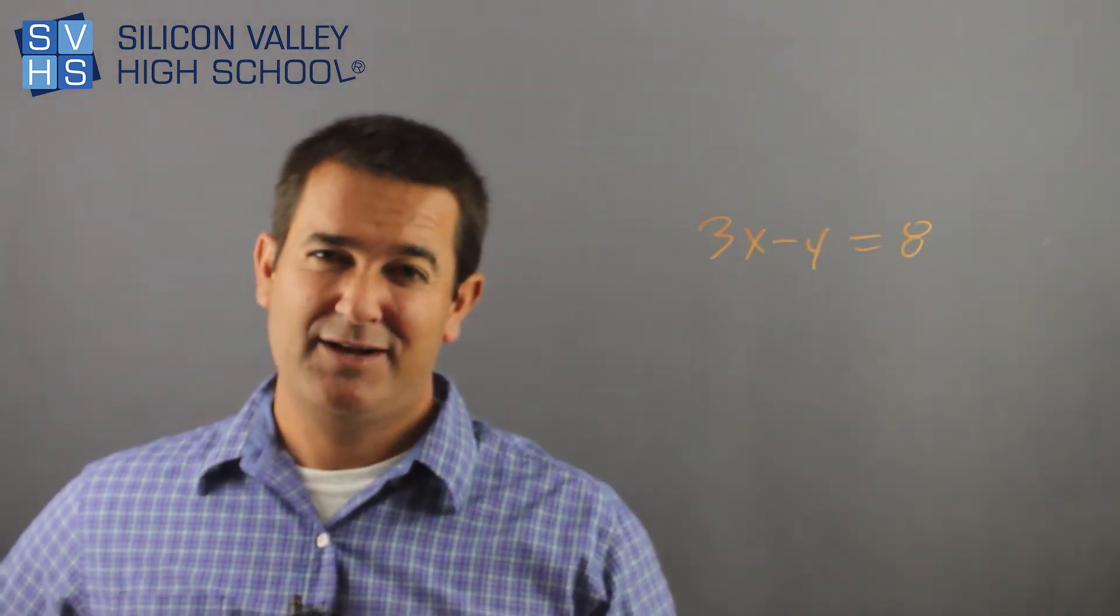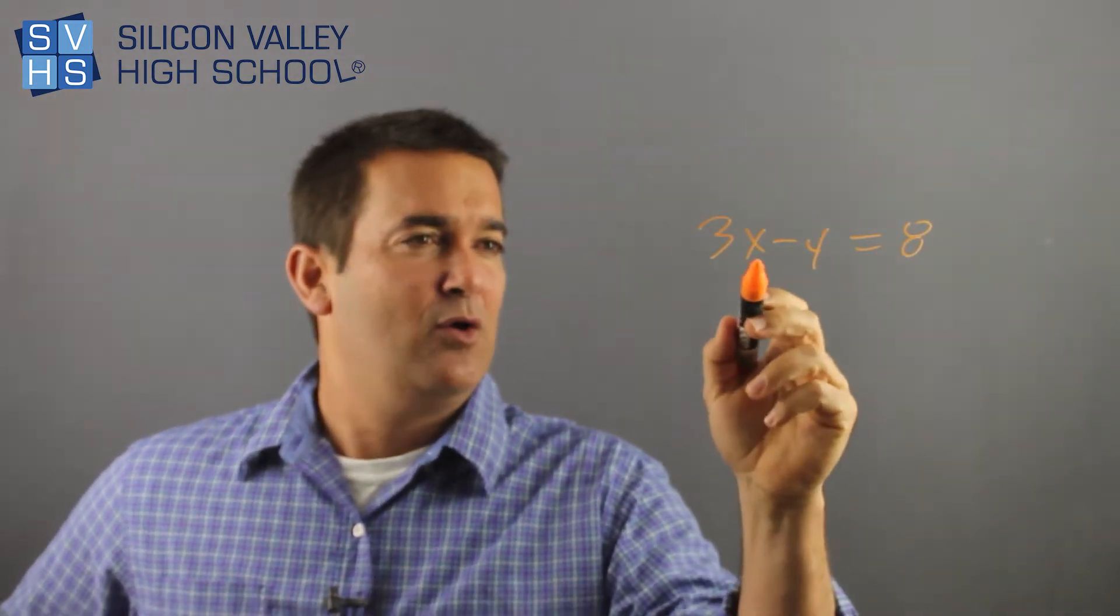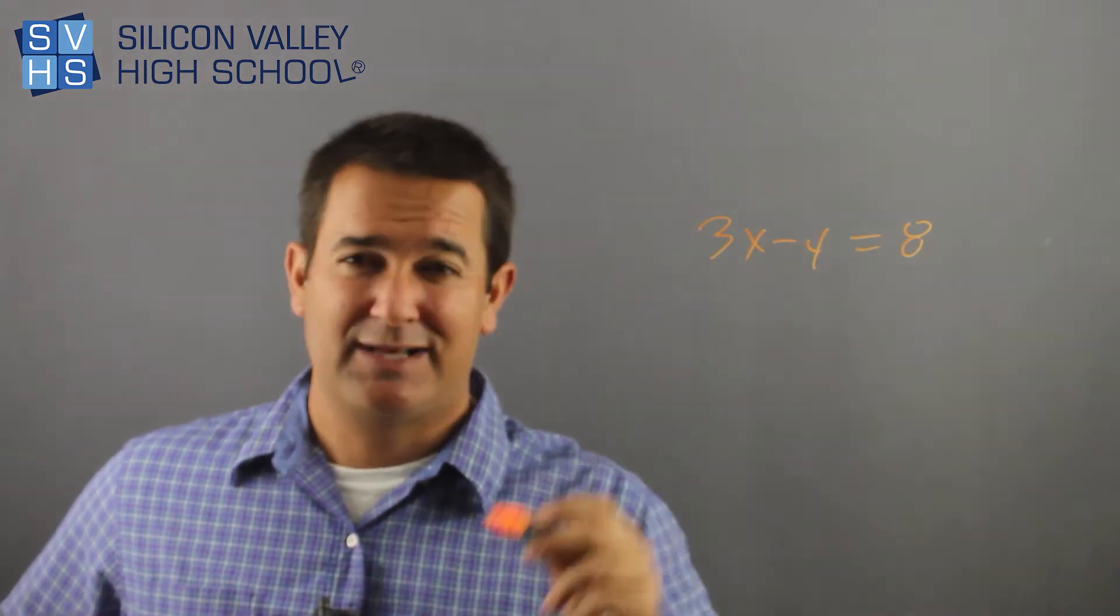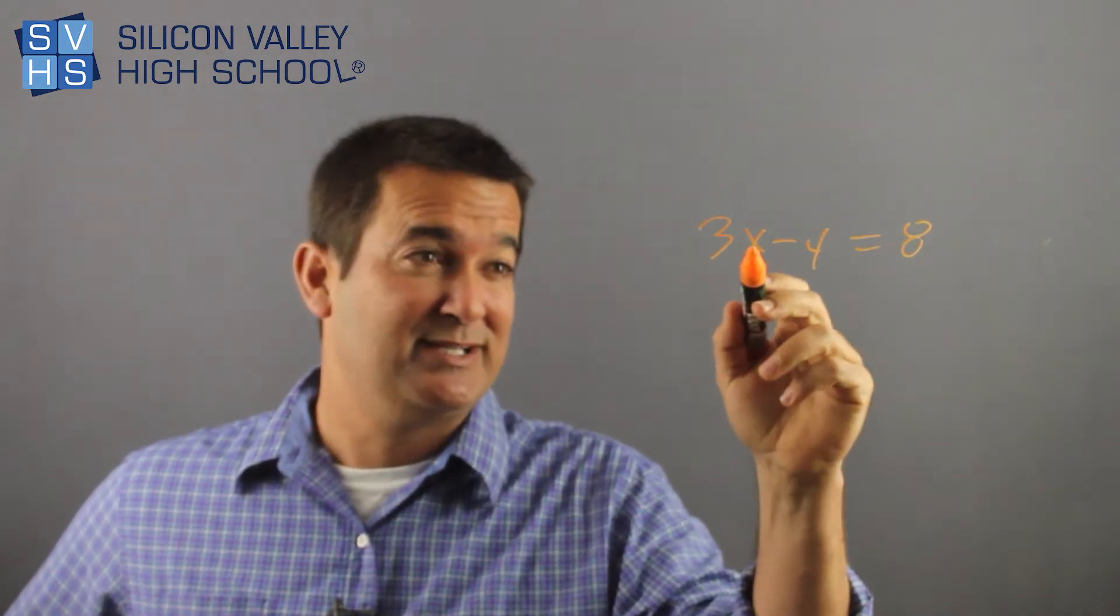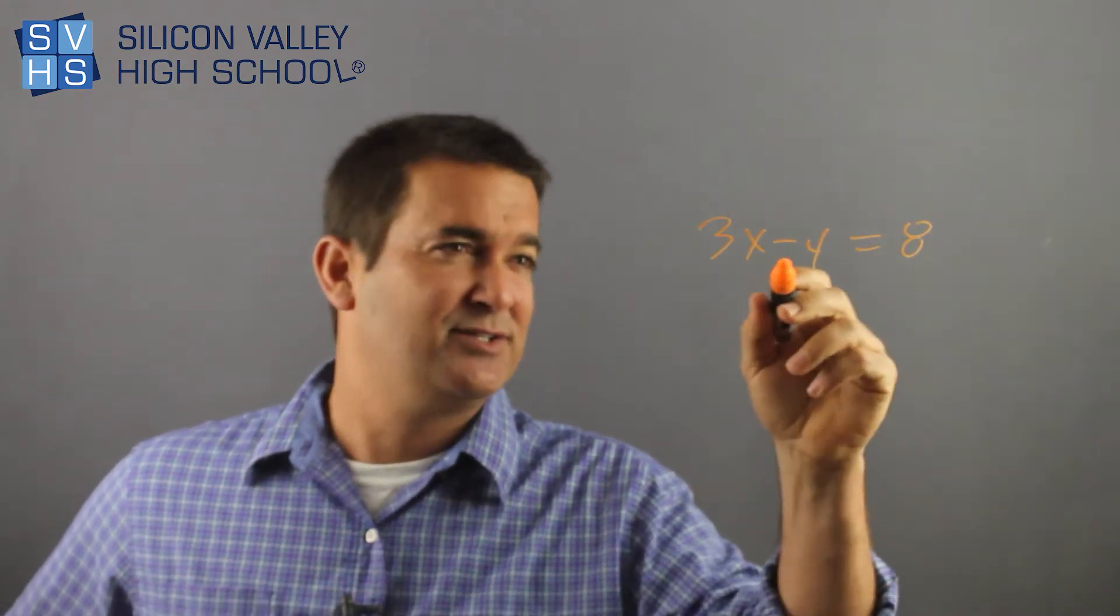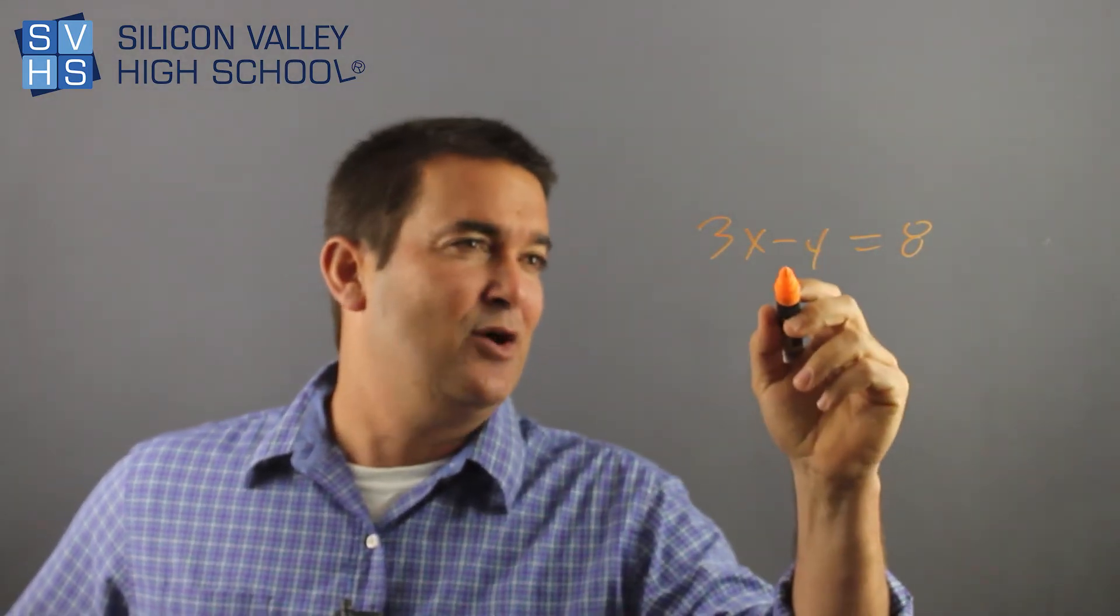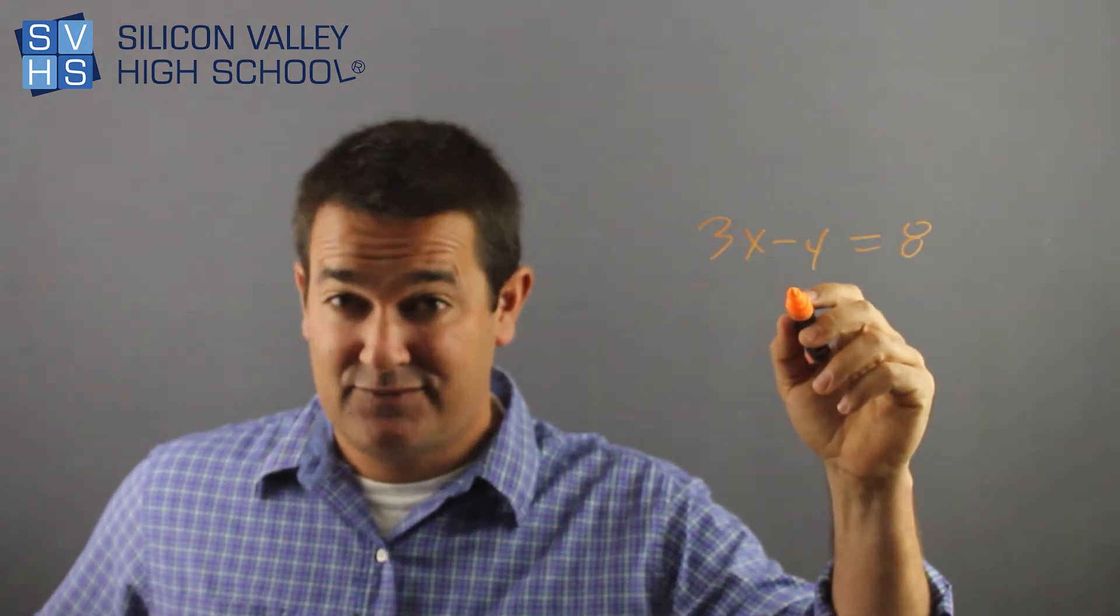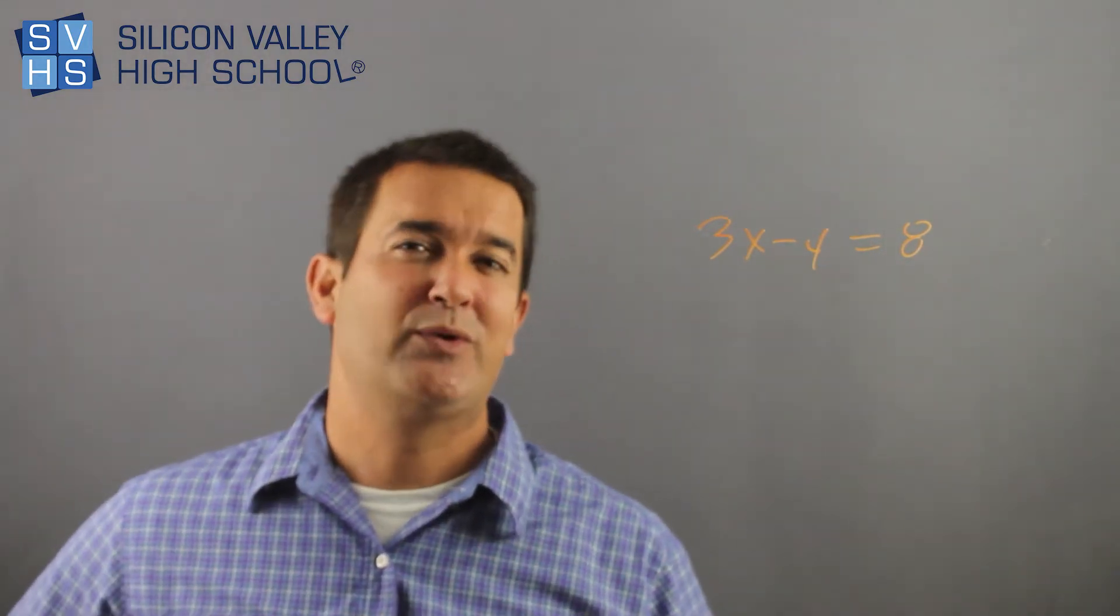So what's weird is if you got good at one step, you'd say, well, I want x alone, right? It looks like this 3 is in my way. I got to do something. Ryan told me if it's 3 times x, you divide. I also see that I have this minus 4 in the way. I know that to get the 4 to the opposite side, you do the opposite. So if it's minus 4, you would add 4 to both sides. But the problem is, what do I do first?